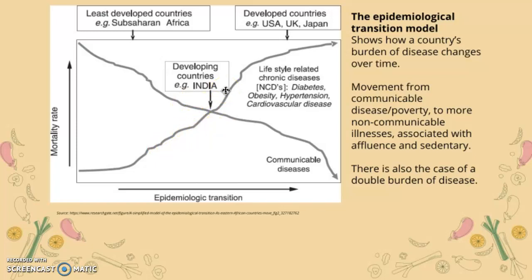There is a point of double burden of disease, where you have both diseases of poverty — communicable diseases — and diseases of affluence, which are lifestyle-related chronic diseases. As the country develops further along the epidemiological transition, communicable diseases fall and non-communicable diseases rise due to affluence and sedentary lifestyles.